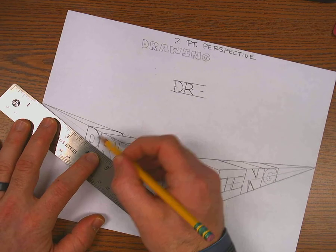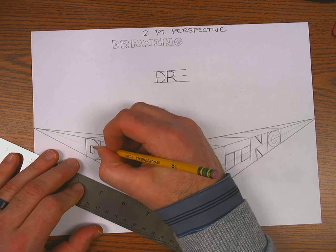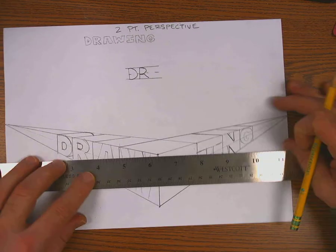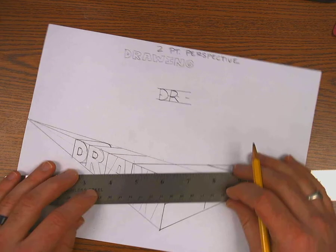I'll make sure that's going to the vanishing point on the bottom, on the top. And there's a corner there. So from that corner, I'll draw it to the vanishing point, just like that.